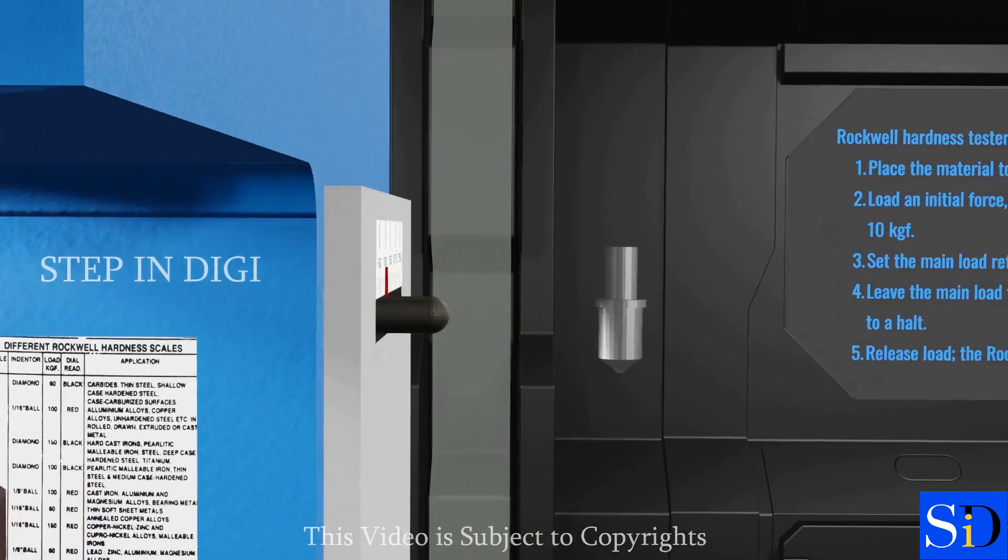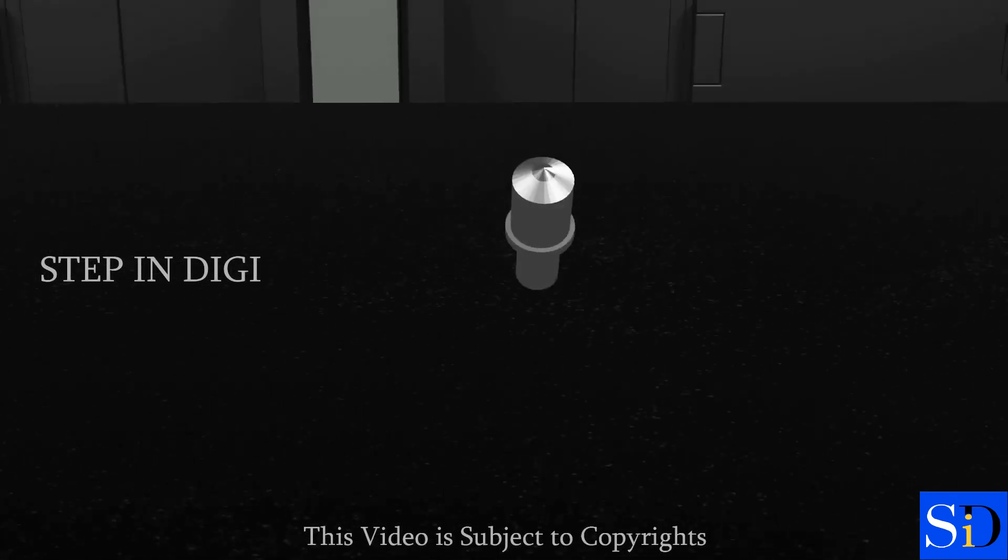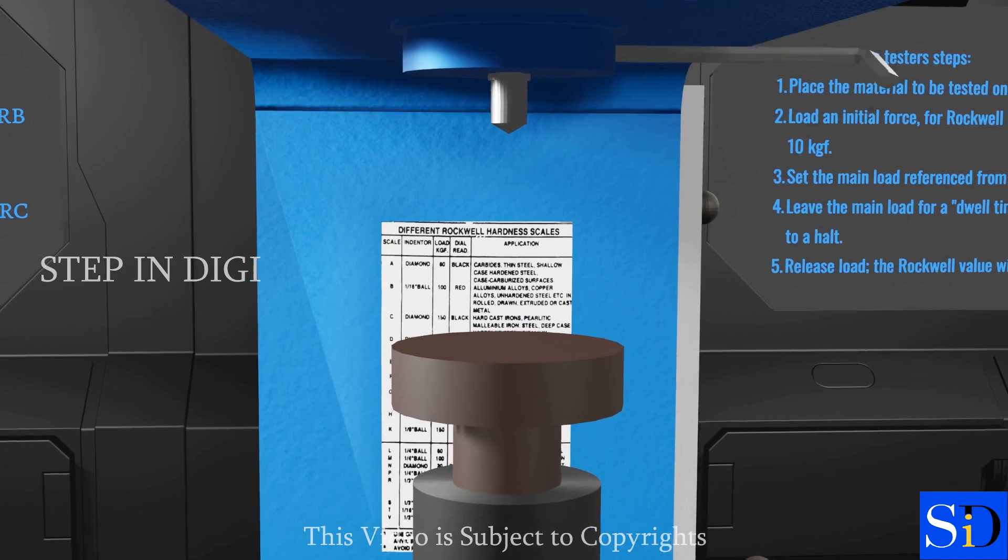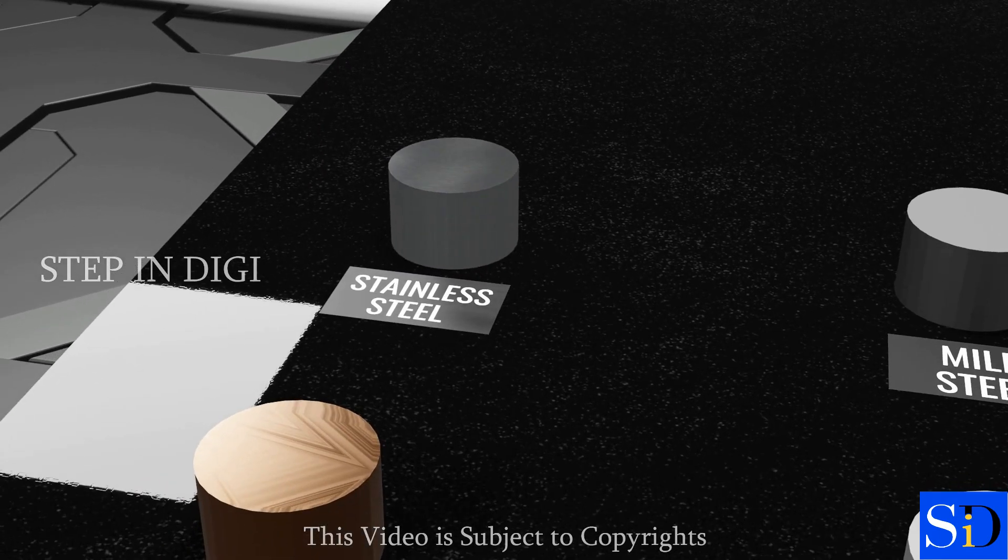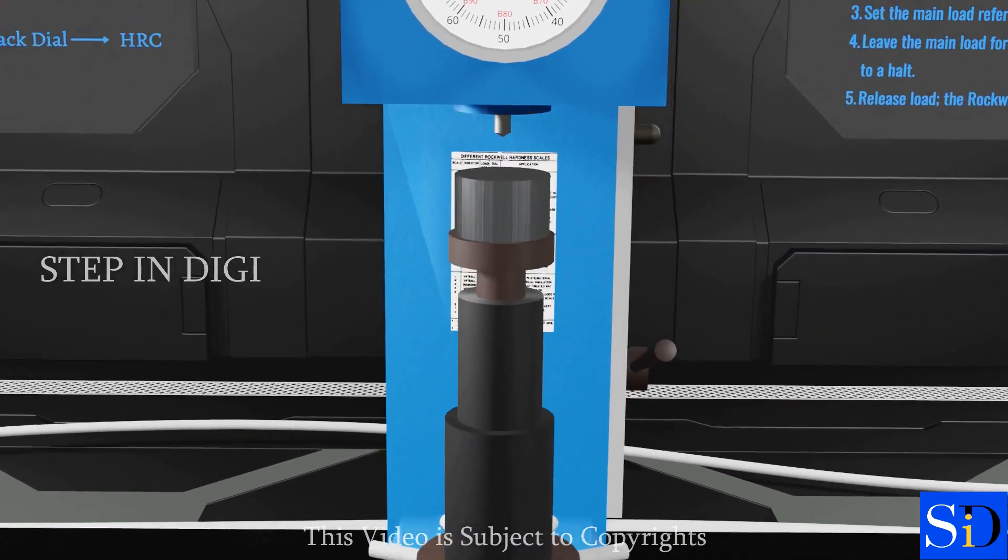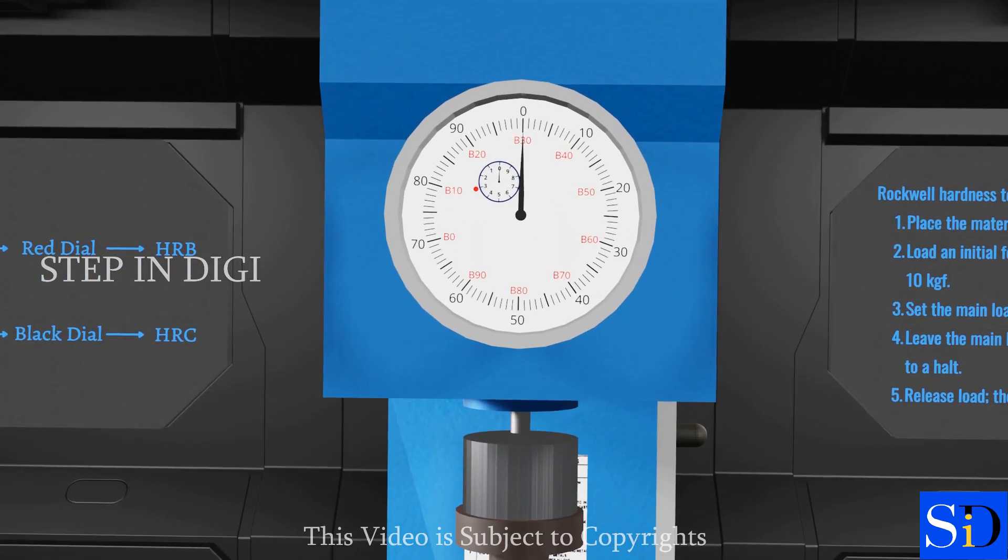First, let's replace the ball indenter with the diamond indenter. Now, let's place the test piece of stainless steel on the supporting table. Now, rotate the hand wheel until the tip of the diamond indenter touches the test piece. And the dial reaches zero on black dial with the bigger needle, and three on the smaller needle, which means 10 kilograms of minor load is applied on the test piece.